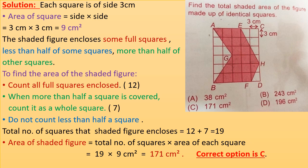So the total number of squares the shaded figure encloses equals 12 plus 7 equals 19. Area of shaded figure equals total number of squares times area of each square equals 19 times 9 cm squared equals 171 cm squared. The correct option is C.